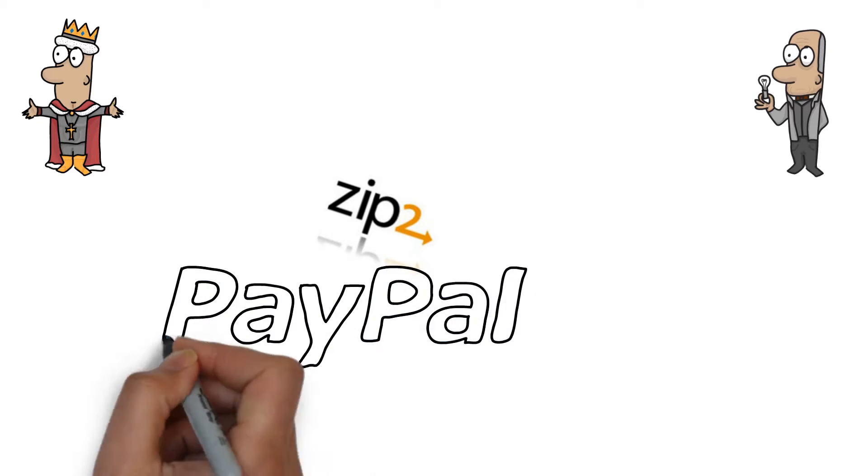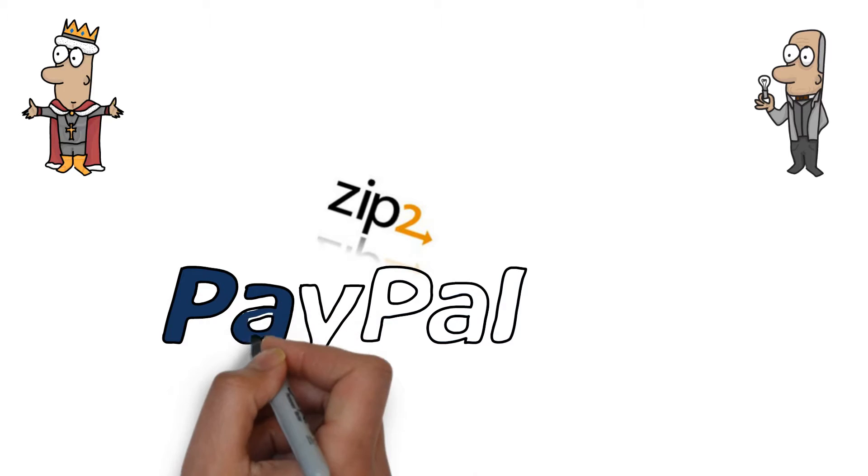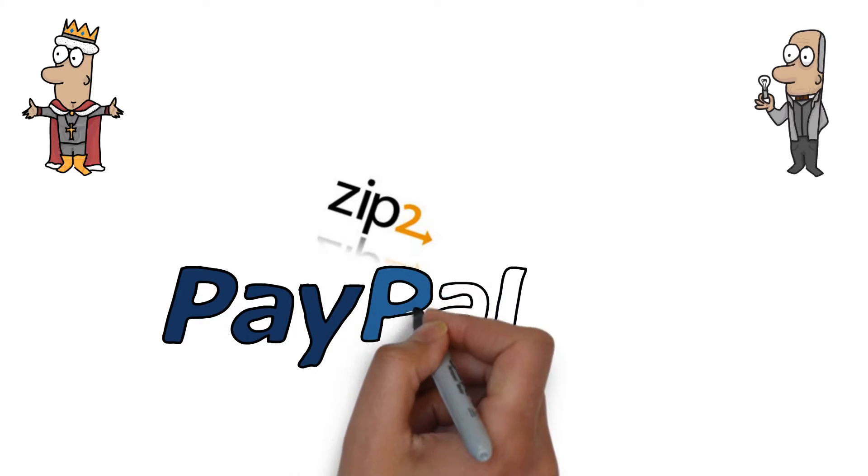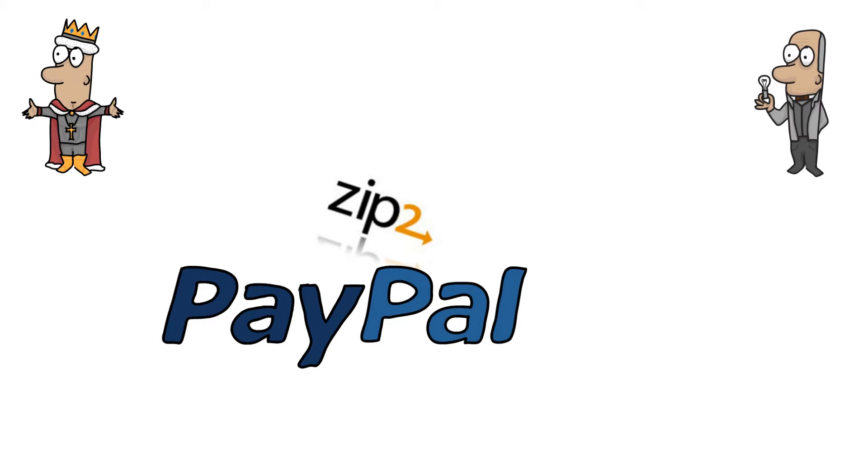After Zip2, Musk shifted his focus to the banking industry and was a co-founder of PayPal, a company currently valued at around $50 billion.